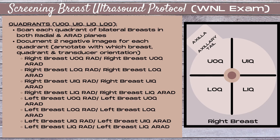It's important to know what images to take. The first thing you need to do is split the breast into quadrants: the upper outer quadrant, the upper inner quadrant, the lower inner quadrant, and the lower outer quadrant. You are going to scan each quadrant in both breasts — right and left — in both the radial and the antiradial planes. For each quadrant you're going to document two negative images.